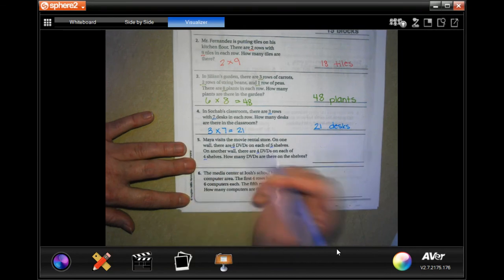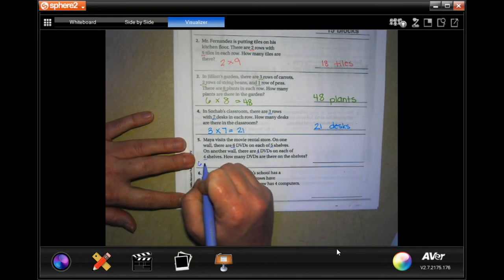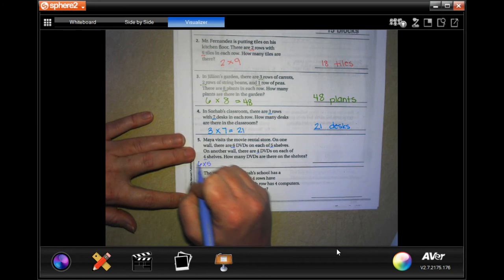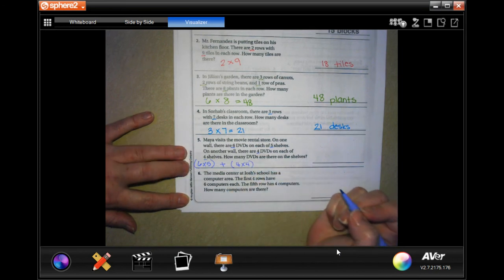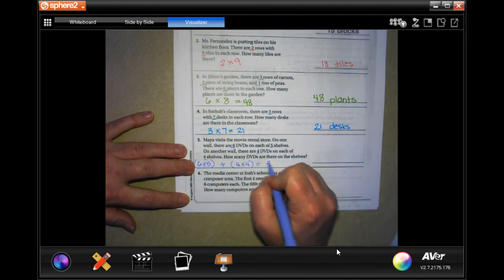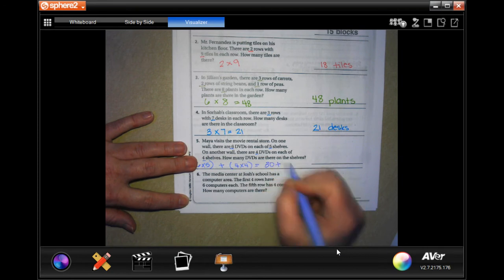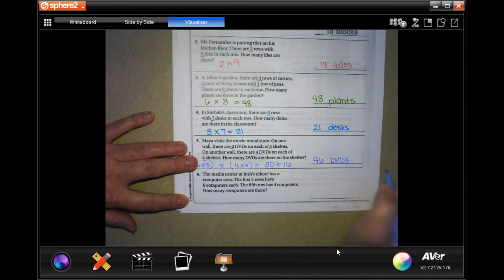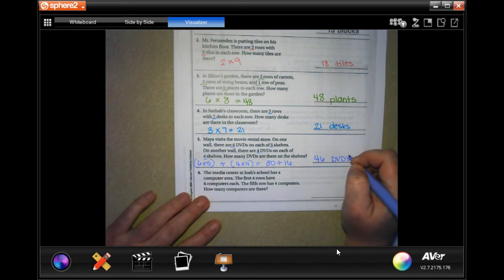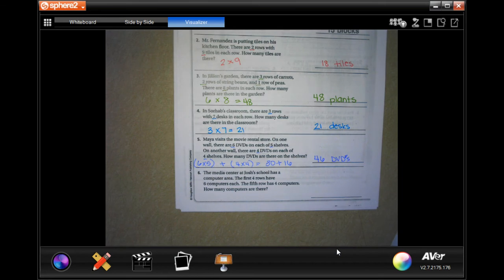I'm gonna go six DVDs on five shelves, plus four DVDs on four shelves. So six times five is 30, and four times four is 16. Well, 30 plus 16 is 46 DVDs.